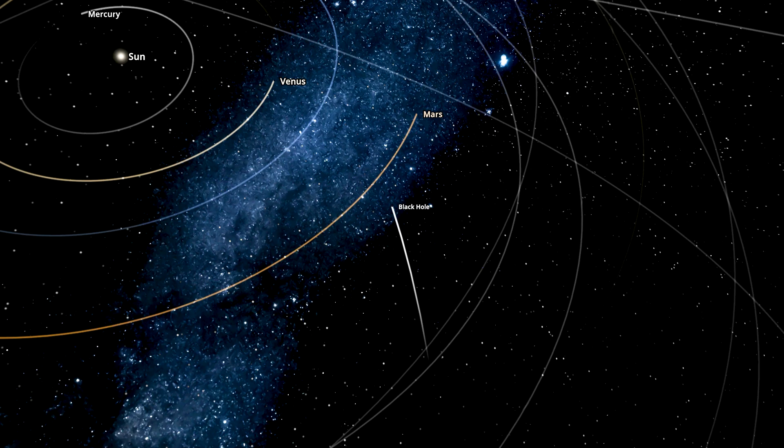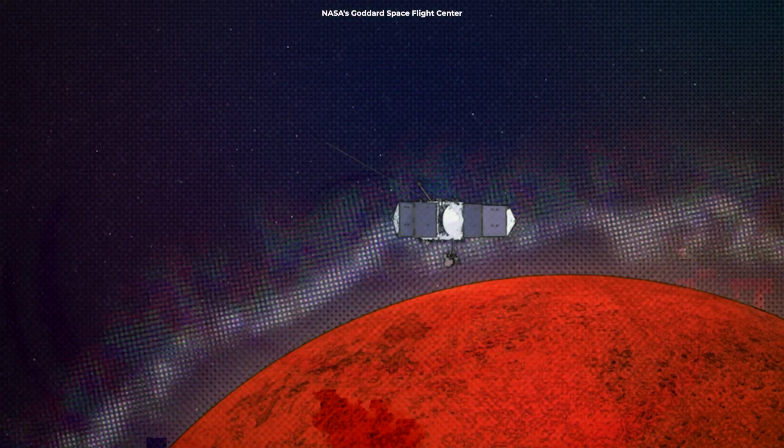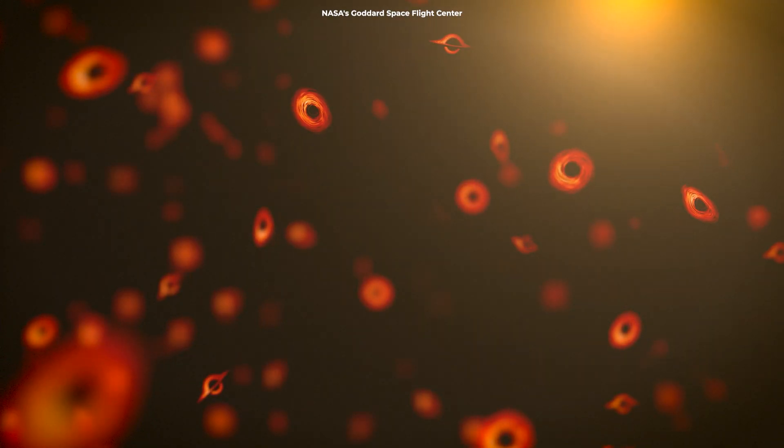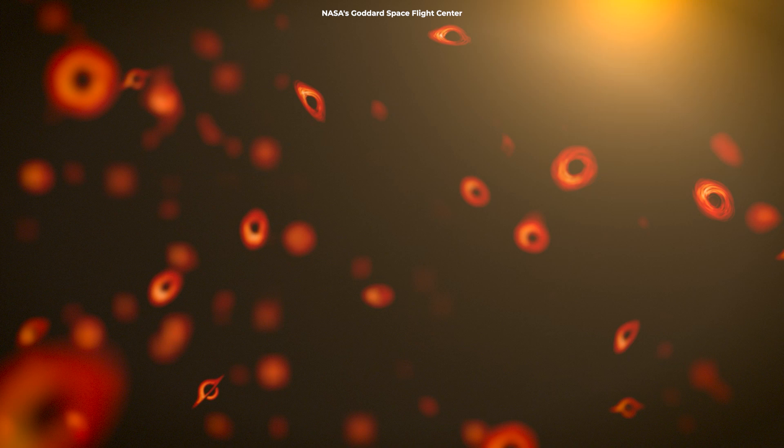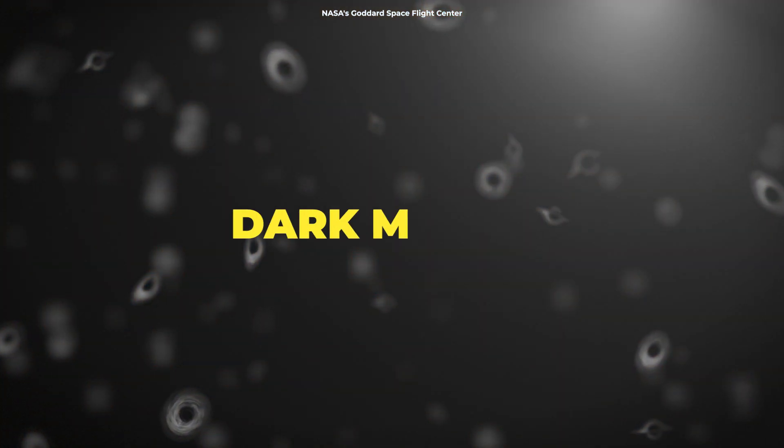But it might just leave a tiny ripple, like a pebble in a pond, and that ripple could be detected by how Mars wobbles in its orbit. And here's the crazy part, finding these tiny black holes might help solve one of the biggest mysteries in the universe, dark matter.